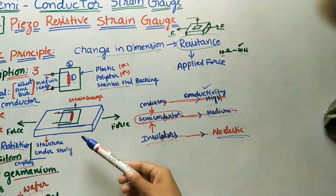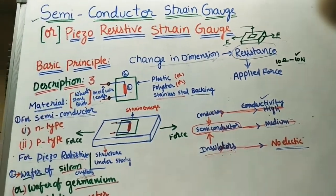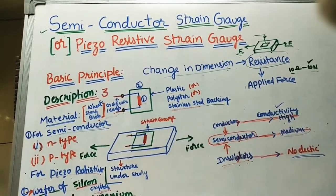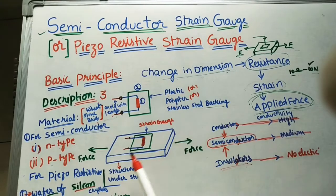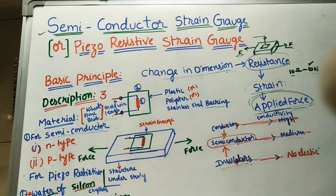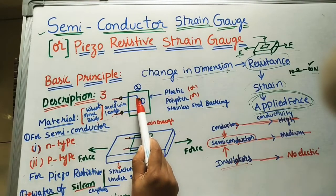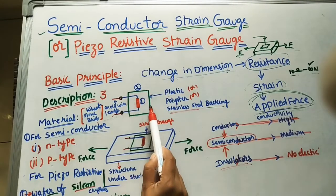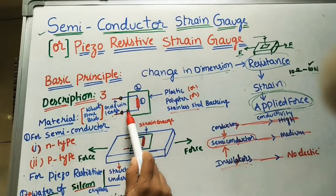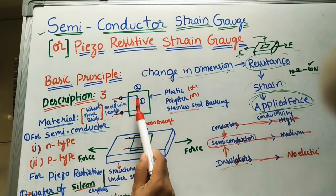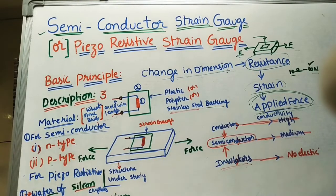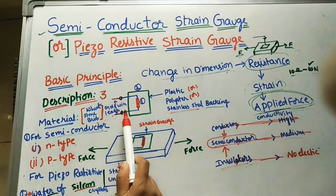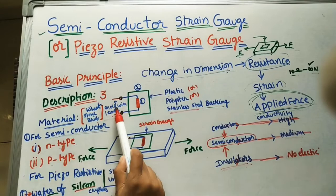This semiconductor material is used as the first part and is fixed in the strain gauge. The second part is the backing plate — it may be plastic, polyester, or stainless steel. We paste the semiconductor material onto this backing plate. The third part is the gold leads: we take the semiconductor wires and fix them with gold wires by soldering at two ends. These leads connect to the Wheatstone bridge, which is the third part and measures the change in resistance in the semiconductor material.